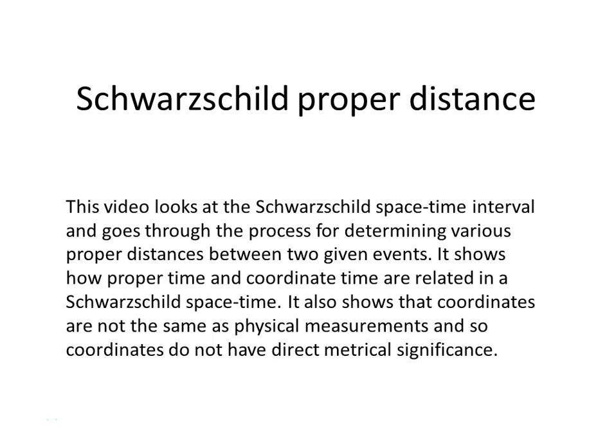This video looks at the Schwarzschild spacetime interval and goes through the process for determining various proper distances between two given events. It shows how proper time and coordinate time are related in a Schwarzschild spacetime. It also shows that coordinates are not the same as physical measurements, and so coordinates do not have direct metrical significance.